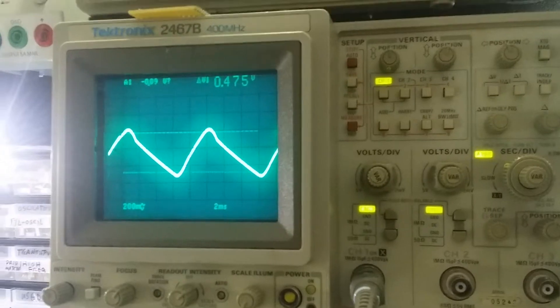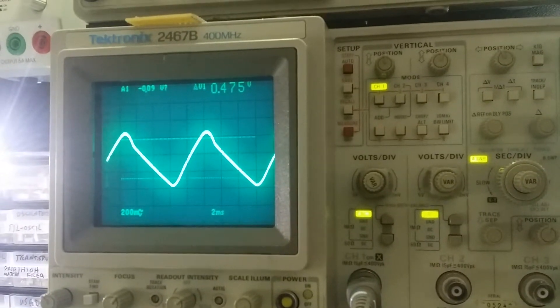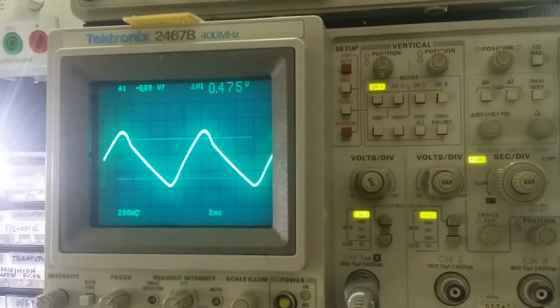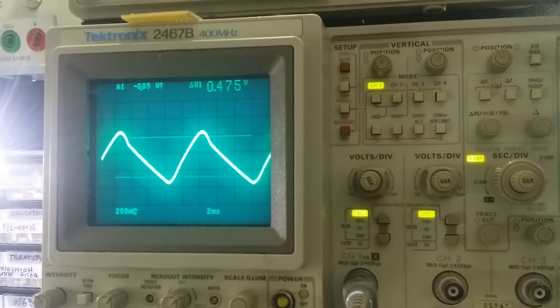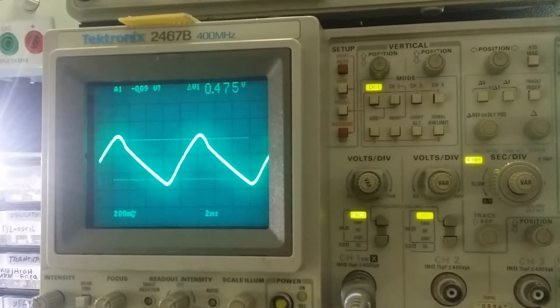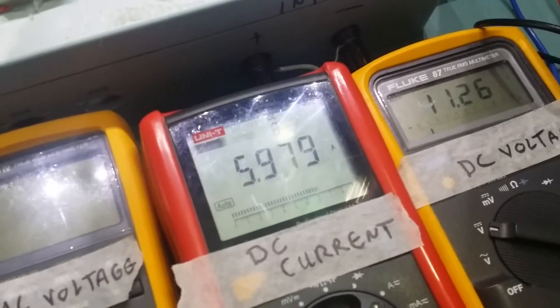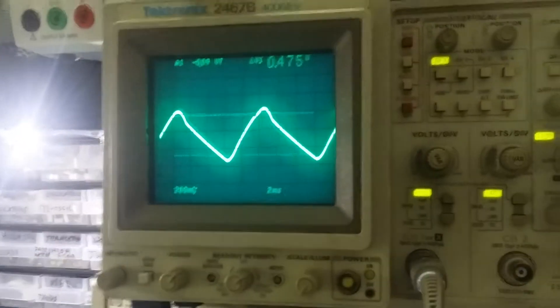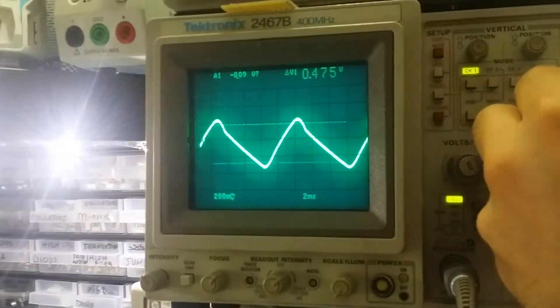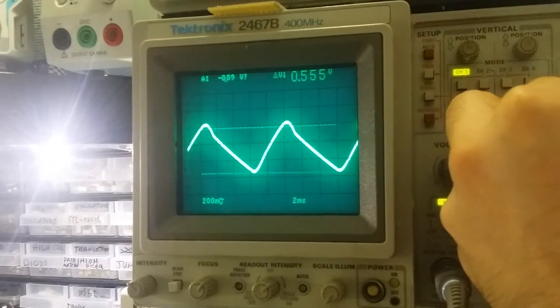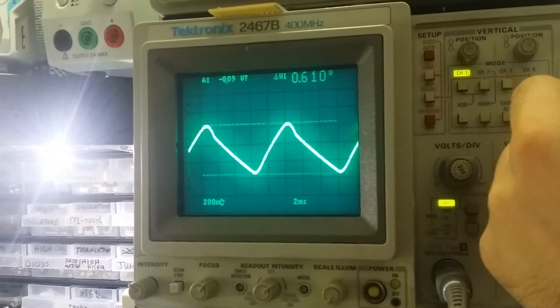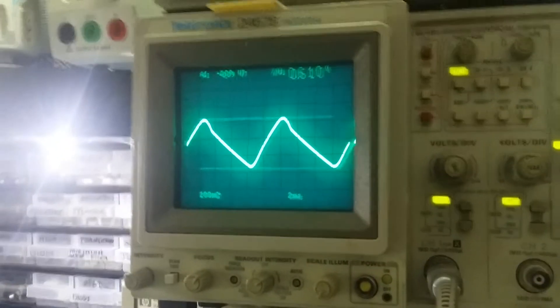Let's go all the way to 6 amp. As you can see here we're pulling almost 6 amp. And what we got here as a ripple is 610 millivolts of ripple.